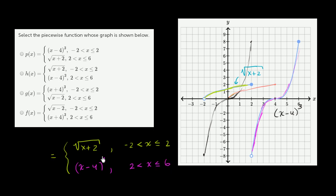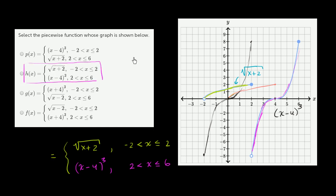So which of these choices matches what we just described? Square root of x plus 2 for negative 2 less than x less than or equal to 2, and x minus 4 to the third for 2 less than x less than or equal to 6. So I would go with that one.